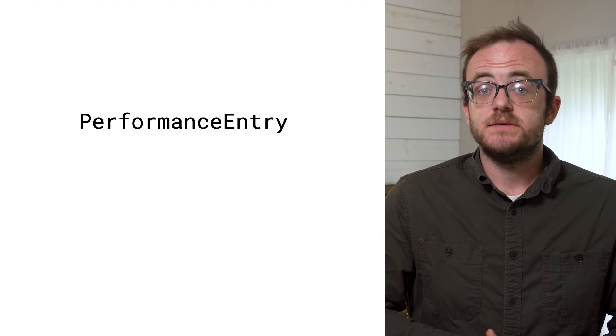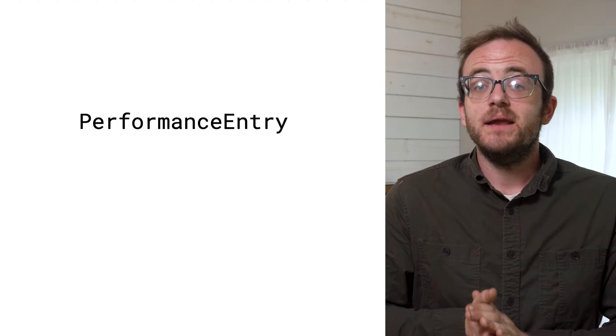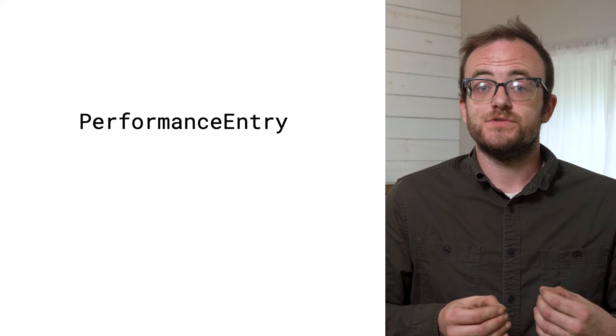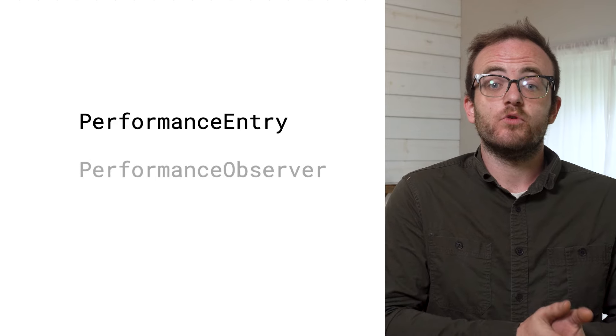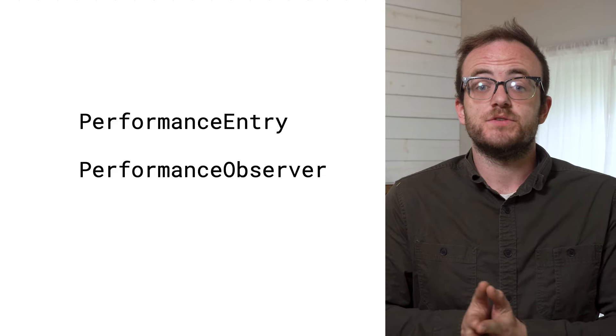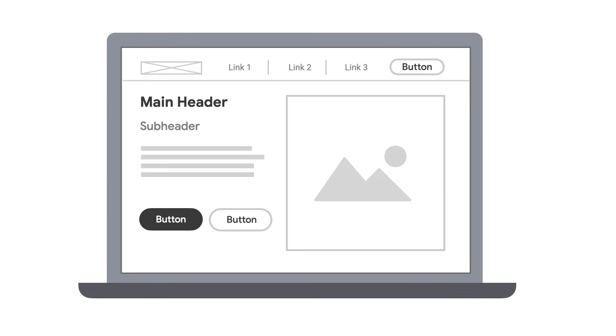Just like the other web vital events discussed throughout this series, paint events are exposed as performance entries that we track and analyze through the Performance Observer Browser API. Every time the browser paints, we know about it and understand each element on the page as it loads. It's very powerful, but it's overwhelming — every paint, every time a pixel is updated, it's a lot of events. That's why there's a separate, more useful largest contentful paint event.